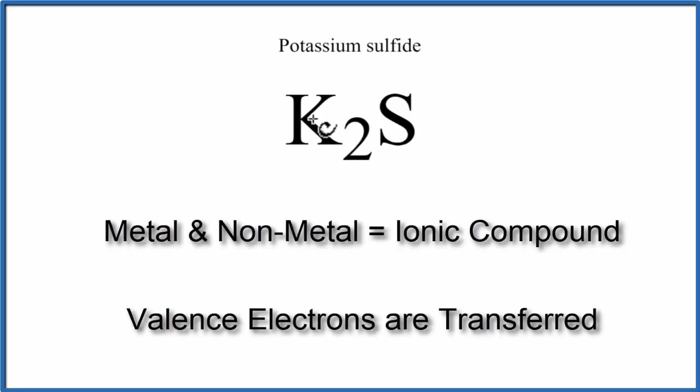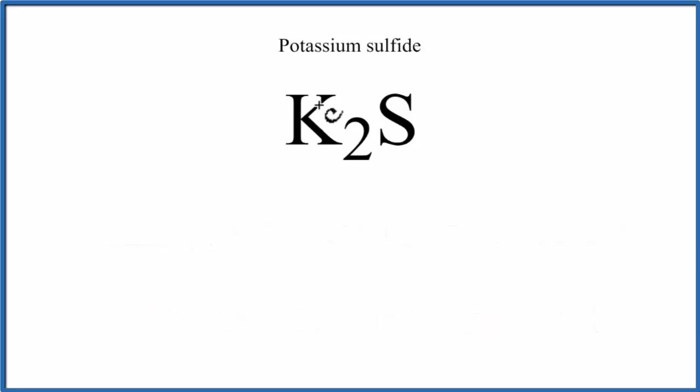Valence electrons will be transferred from the metal to the non-metal. So let's put S in the middle and then K on either side.